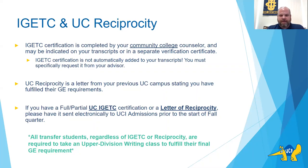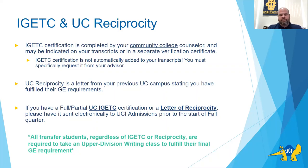It may be something on the electronic request — maybe a checkbox — but you definitely want to make sure you have it sent to UCI admissions, because that's how we'll know if you've completed UCI IGETC. UC reciprocity is typically a letter you receive from your home UC campus stating that you've completed their GE certification. Make sure you have the official copy sent electronically to UCI admissions prior to the start of fall quarter — that's the only way we can give you full credit for it.